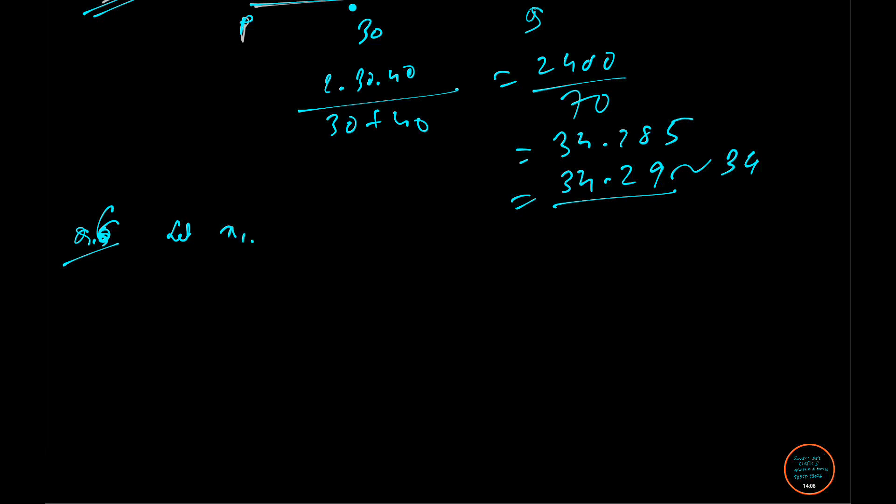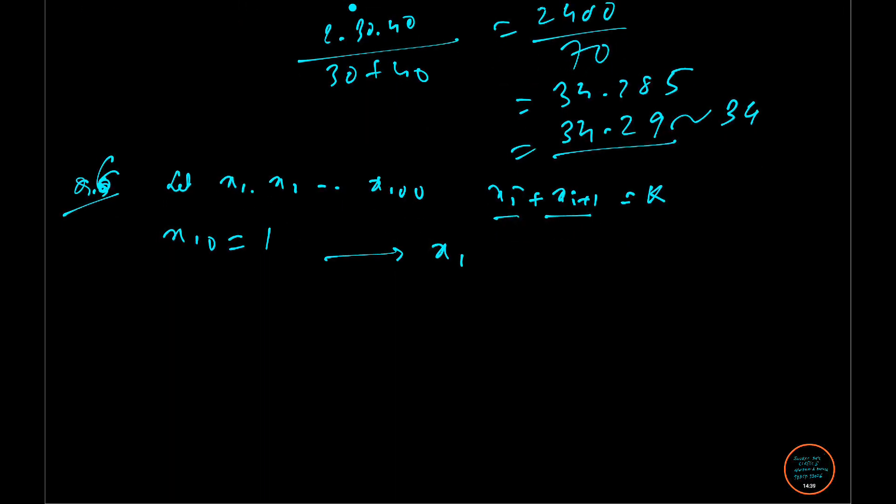Here they have given let X1, X2, dot dot dot X100 be the positive integers such that XI plus XI plus 1. Integer and its next integer sums up to K. And K is a constant. They have given X10 equal to 1, so they have asked us to find the value of X1. This is the basic structure. Now how we are going to proceed with this. Every two numbers is giving you K.